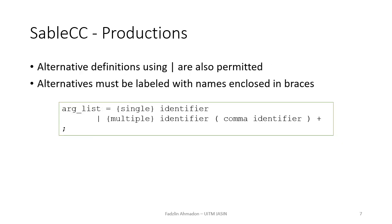Alternative definitions under productions are permitted. They must be labeled, and the vertical bar symbol must be used to differentiate them. The alternative name or label is enclosed in braces. For example, argument_list can be: identifier with the name {single}, or identifier left_parenthesis comma identifier right_parenthesis plus with the name {multiple}.